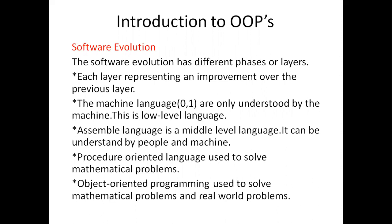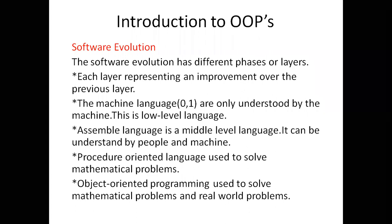Binary number means we have two numbers: either zero or one. This is called machine language, and you can also say this is a low-level language. If we look at the history of software, first we have machine language, later we have assembly language.